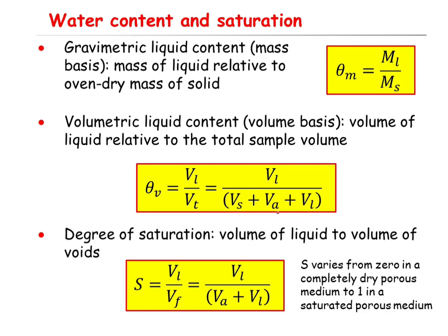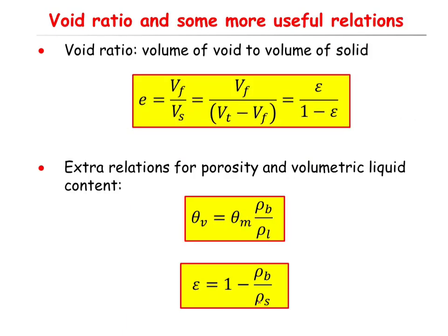Another definition is liquid saturation, defined as the volume of the liquid Vl divided by the volume of the void space — or fluid volume — which equals the volume of the air phase plus the volume of the liquid phase. Void ratio is defined as the volume of the void space, which is Va plus Vl, divided by the volume of the solid phase Vs.